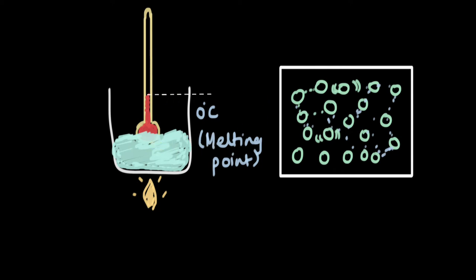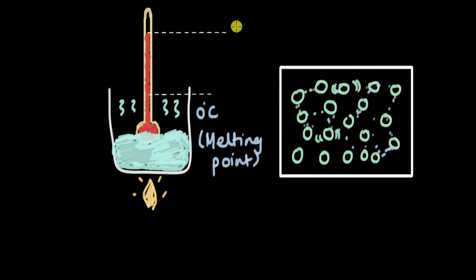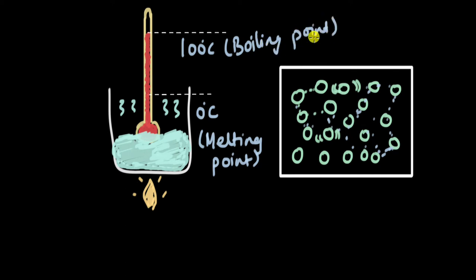We have now reached the liquid state. When you keep on heating, the temperature rises further and there comes a point when the water starts boiling. Boiling is a bulk phenomenon — it happens throughout the body of the liquid. Water boils at 100 degrees Celsius, which is its boiling point. Boiling point is the minimum temperature at which a liquid changes into vapor or gas.